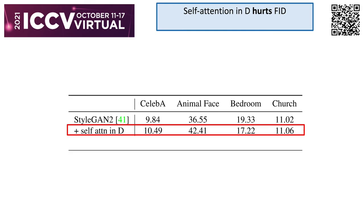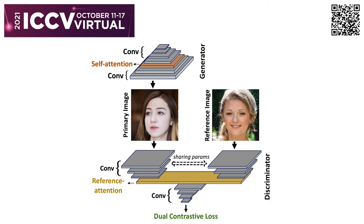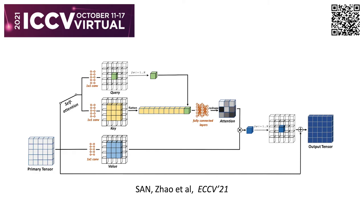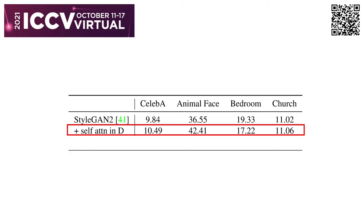A natural follow-up thought is to try the same self-attention in the discriminator. Unfortunately, it hurts the FID no matter how we tune the design, due to the observation that the discriminator already overpowers the generator, so a stronger representation in the discriminator doesn't help. Instead of self-attention, we propose to replace one layer of convolution with our reference attention: we introduce an arbitrary real image as a reference input, feed it through a separate branch along with the primary real/fake input until a certain layer, and attend the primary feature with the reference feature. The only difference from self-attention is changing the source that calculates the key and query to the reference image. The insight is that, just like data augmentation in classification, we augment data at the feature level through reference attention, so as to robustify discriminator training and make it more balanced between generator and discriminator.